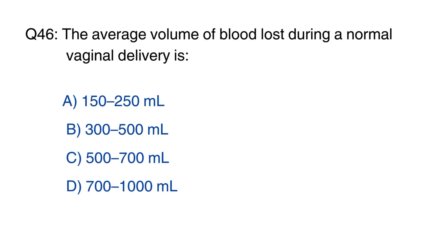Question 46: The average volume of blood loss during a normal vaginal delivery is? The right option is option B, 300 to 500 ml.